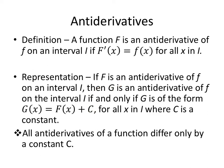If capital F is an anti-derivative of little f on an interval I, then capital G is also an anti-derivative of little f on I if and only if G of x equals F of x plus C for all x in I, where C is a constant. All anti-derivatives of a function differ only by a constant C. There is only one derivative, but infinitely many anti-derivatives, because the derivative of any constant is zero — we can't recover the original constant.